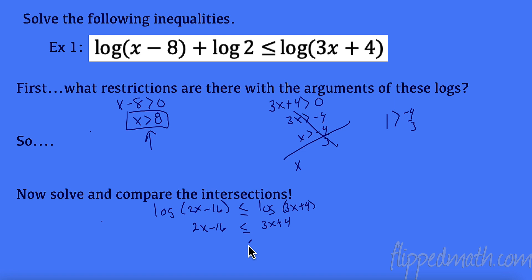So now I have 2x minus 16 equals 3x plus 4. I'm going to subtract 2x over to here, that gives me an x. I'm going to subtract 4 over here, that gives me negative 20. Now this may not make sense to you, so you may want to rewrite it. x is greater than or equal to negative 20.